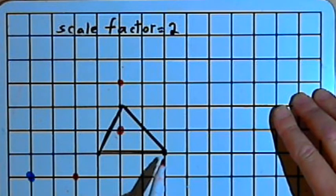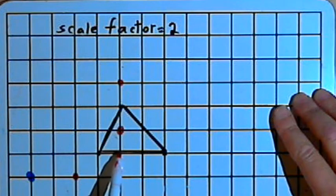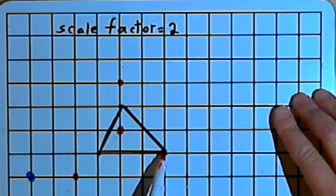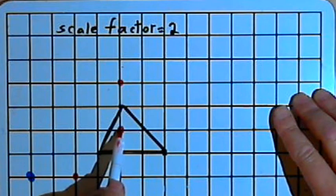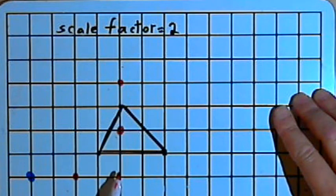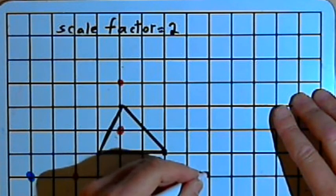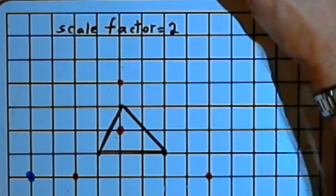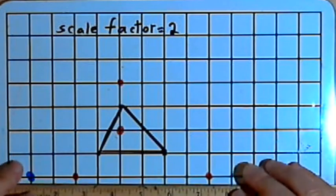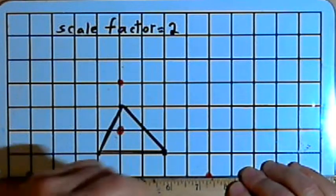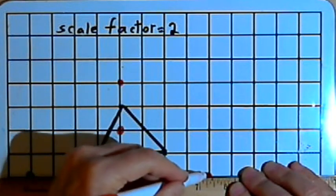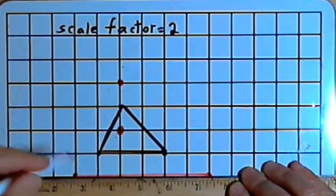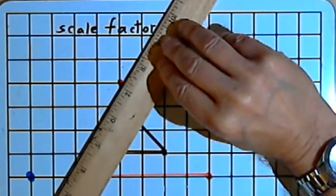For the third angle, I have to go down one unit and over two to the right, so the dilation will require that I go down two units and four units to the right. Now I've got the three corners of the triangle. I can connect those and I'll have my dilated image.